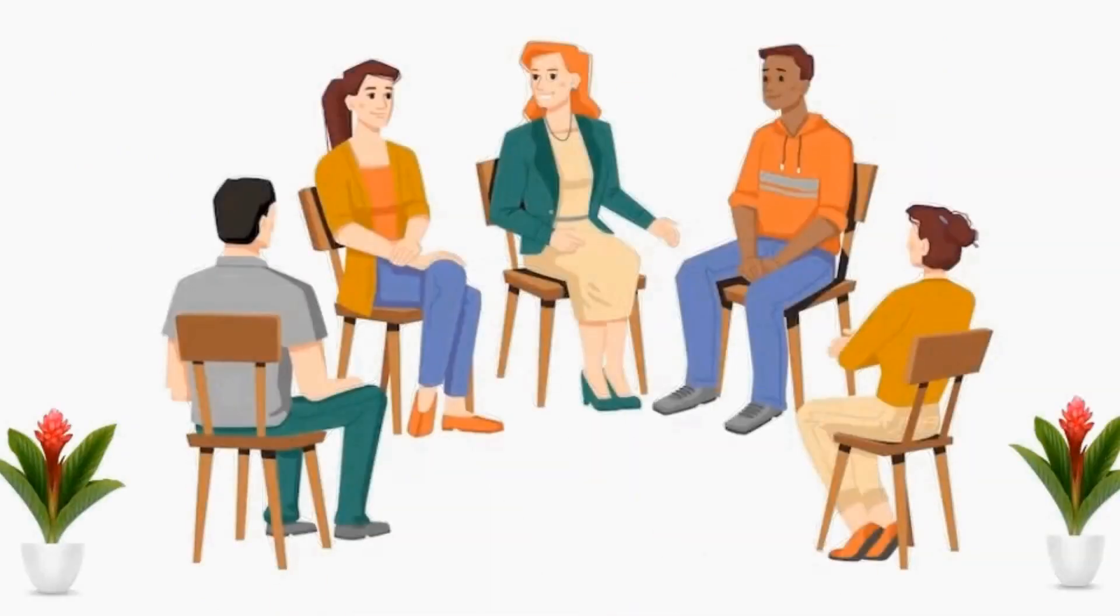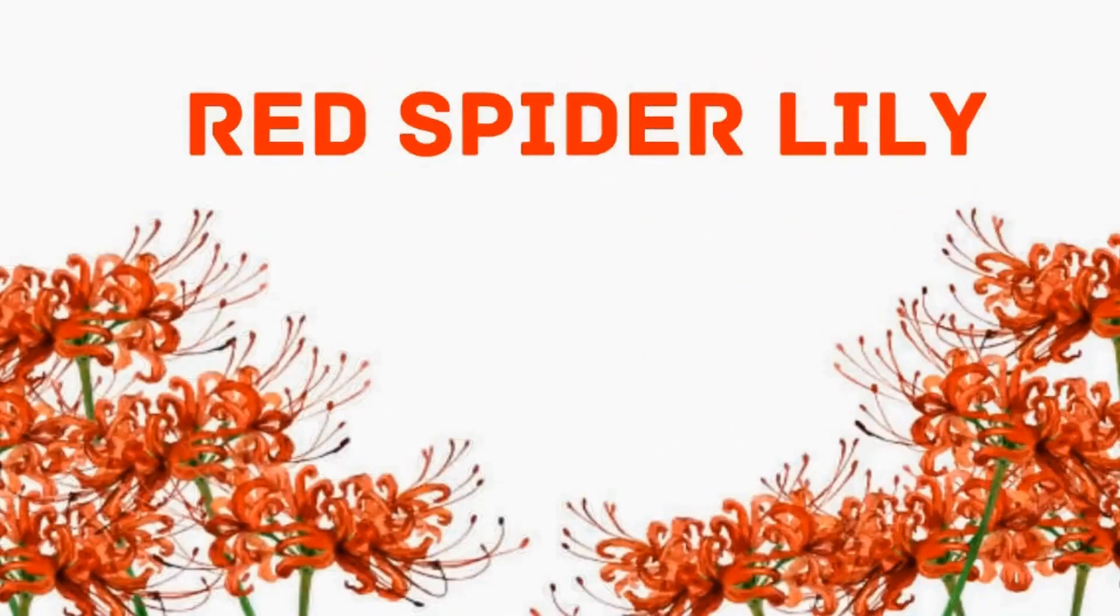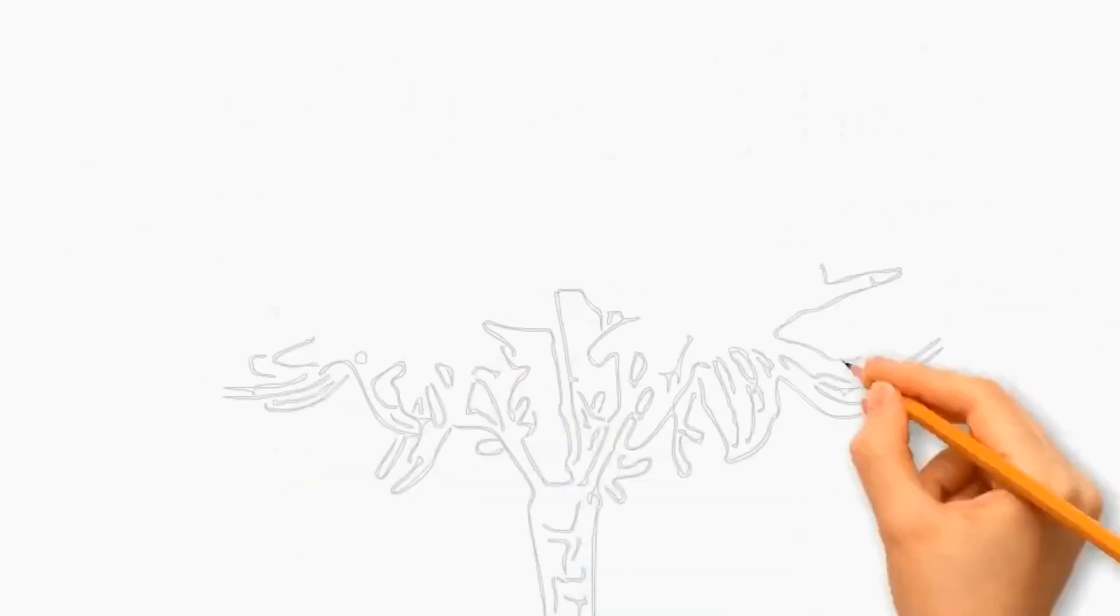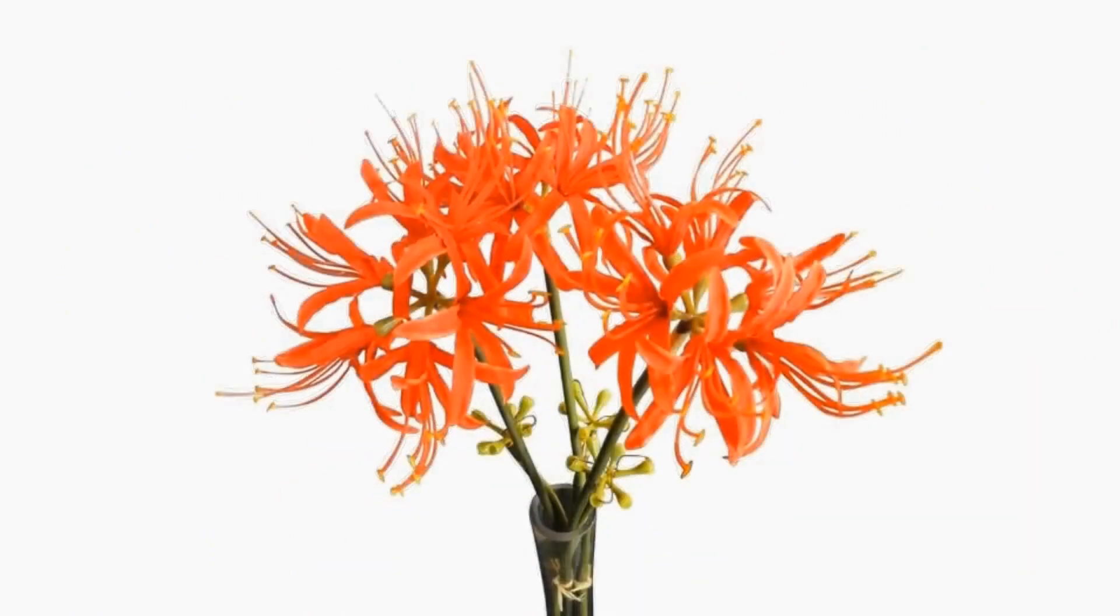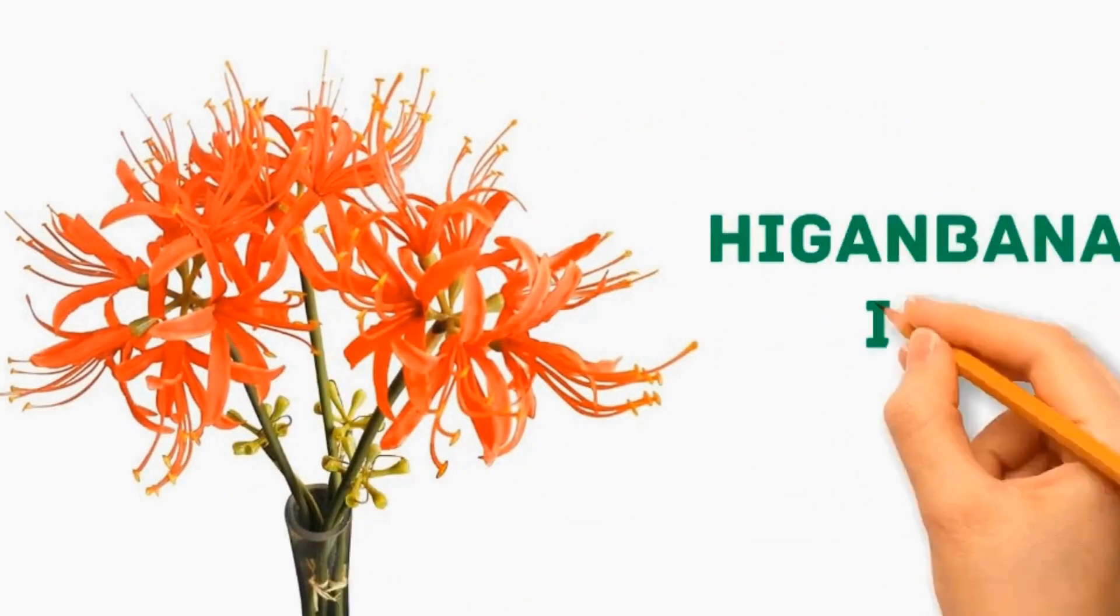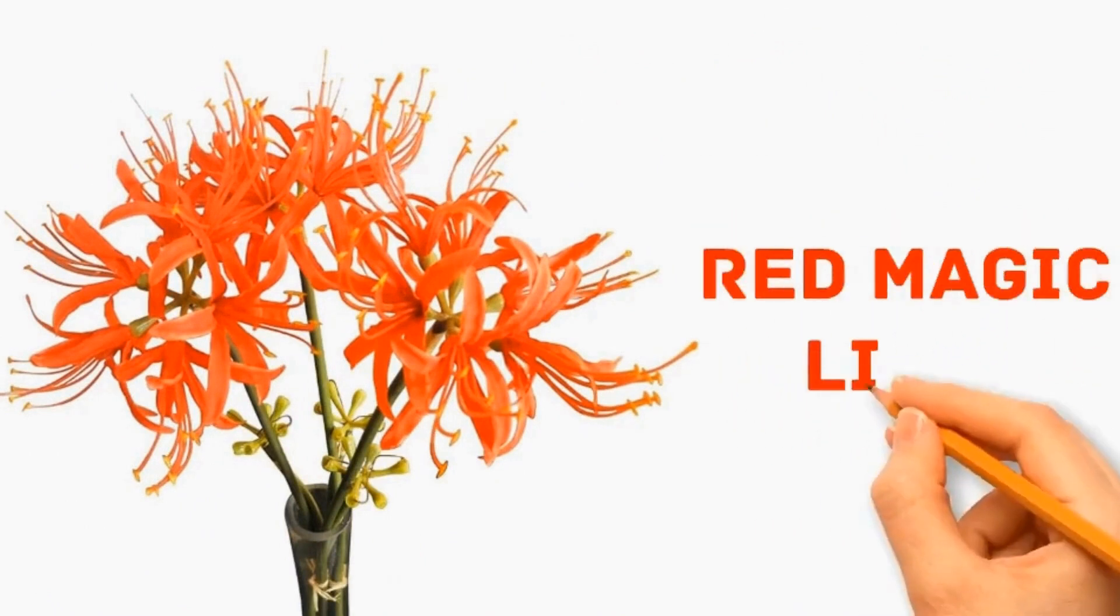Today we will discuss Red Spider Lily. It is a perennial bulbous plant having unique-shaped stunning flower of red color called Higanbana in Japanese. It is also known as Red Magic Lily.